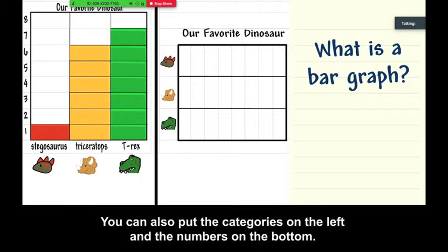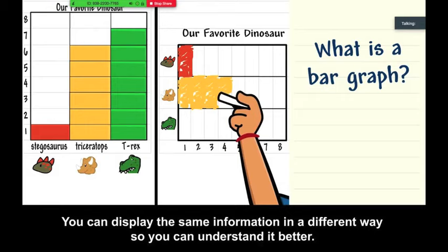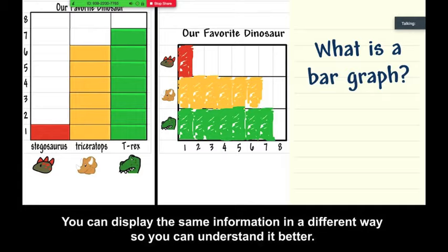You can also put the categories on the left and the numbers on the bottom. You can display the same information in a different way so you can understand it better.